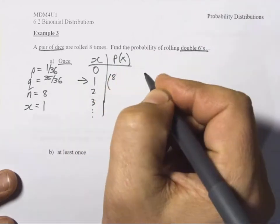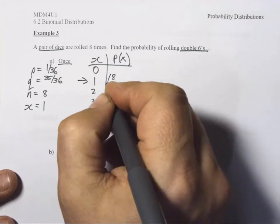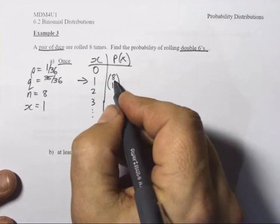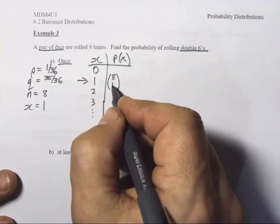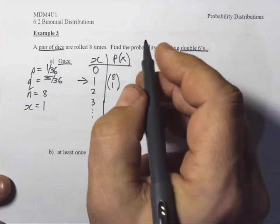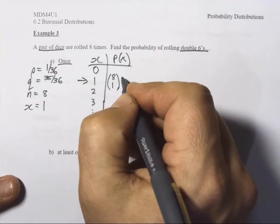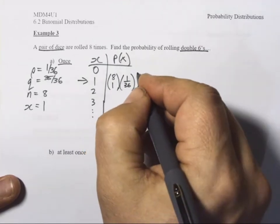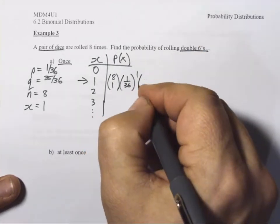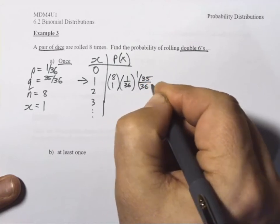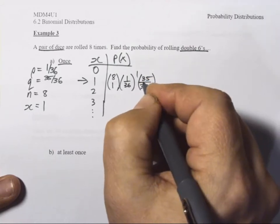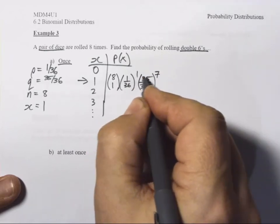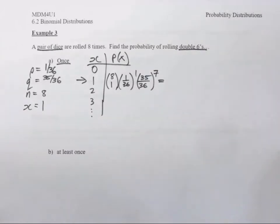Out of eight trials, we must have gotten success one time. So eight choose one comes from Pascal's triangle — eighth row, first position. Success: what's the probability of success? One in 36. How many times did that happen? Once. Failure: 35 in 36. How many times did failure happen if we got one success? Seven. These exponents have to add up to eight — eight trials total.